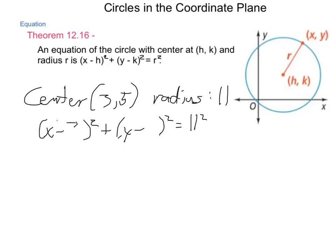Plus y minus, what's the y part of that center? It's 5, equals 11 squared. Simplifying this, we get (x - 3)² + (y - 5)² = 121. So we're able to find the values here simply by substituting in what we have for what we want.